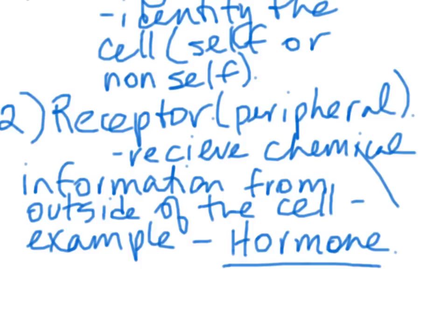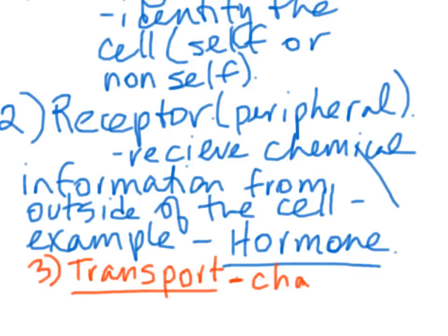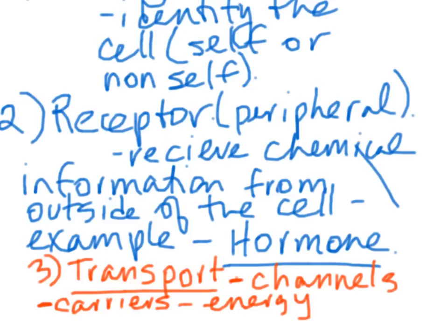Last example, probably the most important: transport proteins. These can either be channels - an opening through the cell membrane where molecules can travel through - or carriers, which imply the expenditure of energy. In the case of the cell, energy is always ATP.